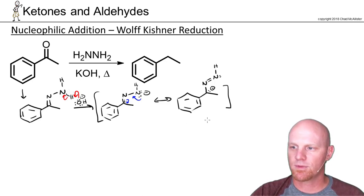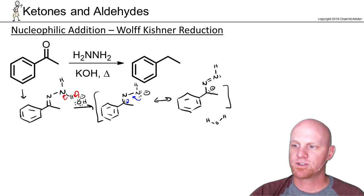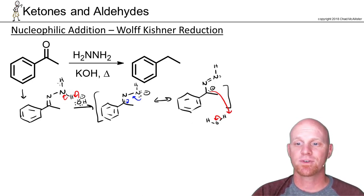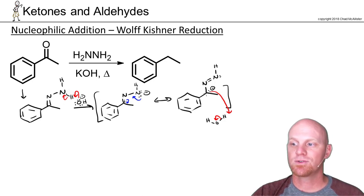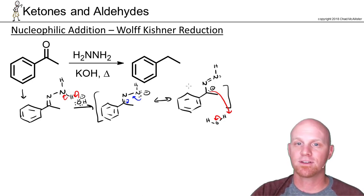When hydroxide deprotonated here, it formed a water molecule. Now we're simply going to protonate that carbon. Essentially, these two steps' net result is they're going to transfer a hydrogen, or an H+ ion, from the nitrogen to what was formerly the carbonyl carbon. That's the net result — just a series of proton transfers to get to our product here.